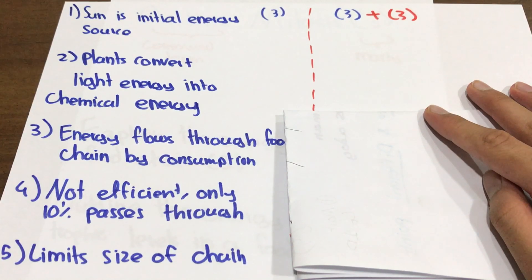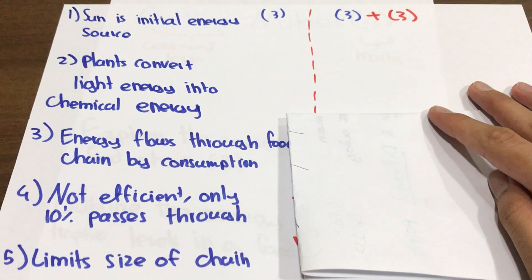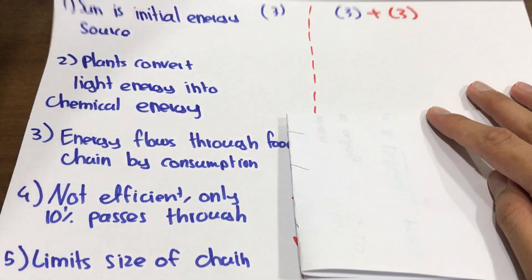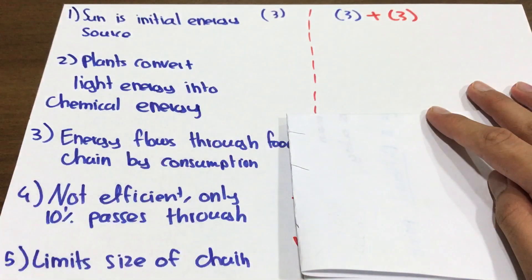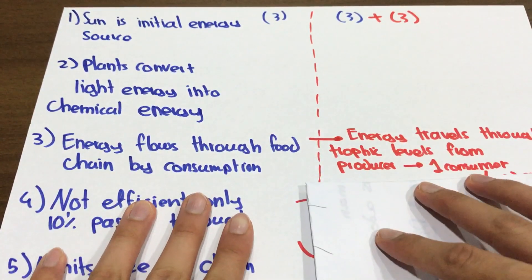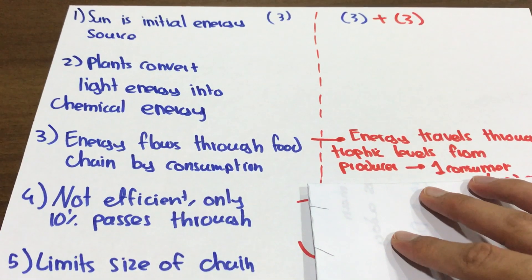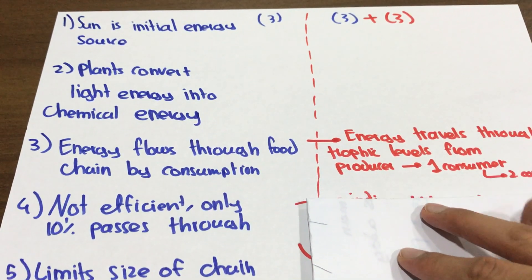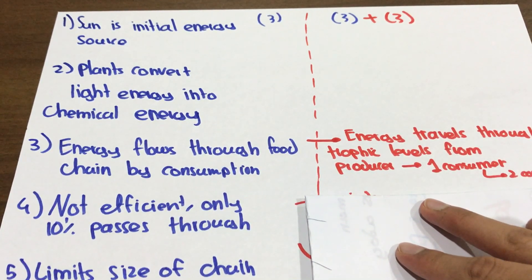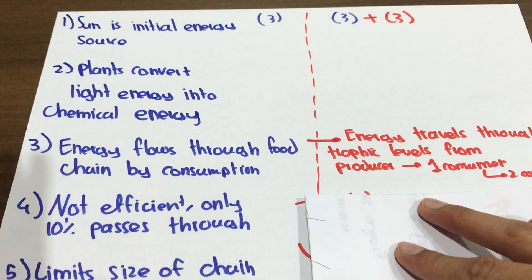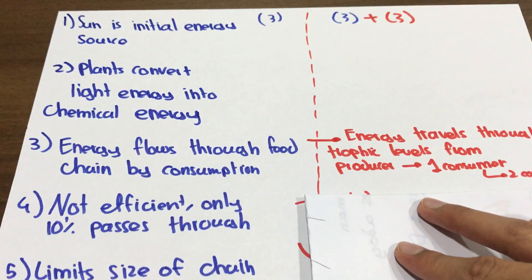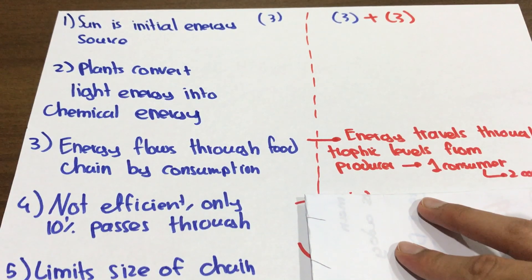Number three: energy flows through food chain by consumption. The question calls for trophic levels, so I think that's a good time to bring that in. I'll say that energy travels through the trophic levels from the producer to the first consumer to the second consumer. I've added just a little bit of extra information, building on my first three points.